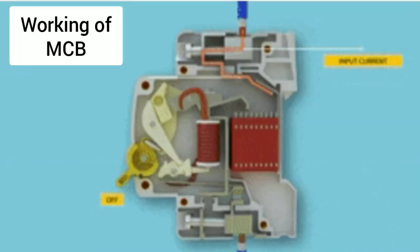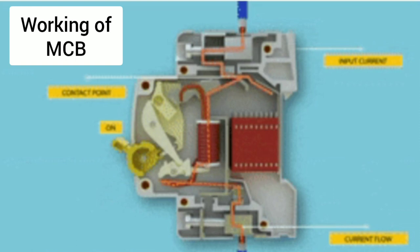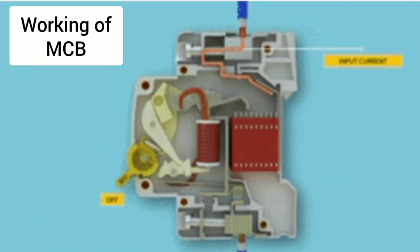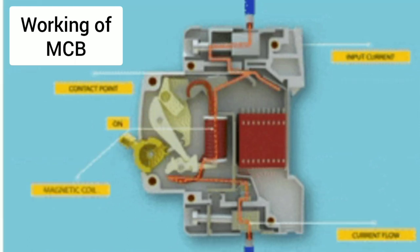MCB has an inner structure — this is a bimetallic strip. This bimetallic strip is automatically switched off. In the normal position, this bimetallic strip is in touch. This bimetallic strip, when there is excess current, this circuit will break and switch off.